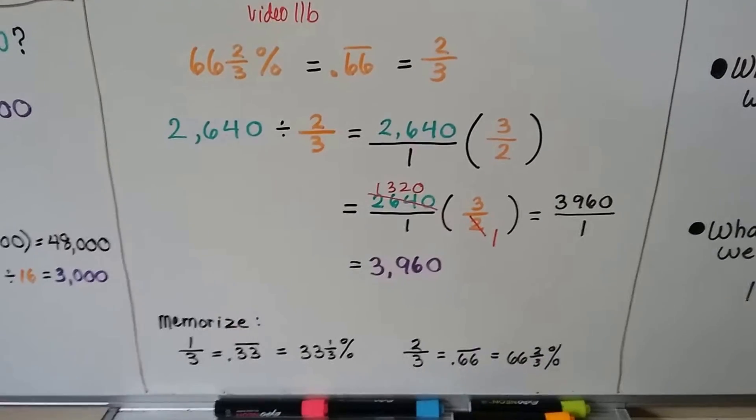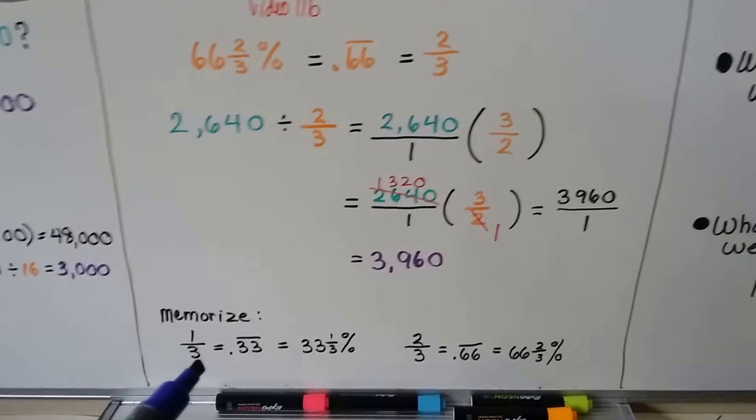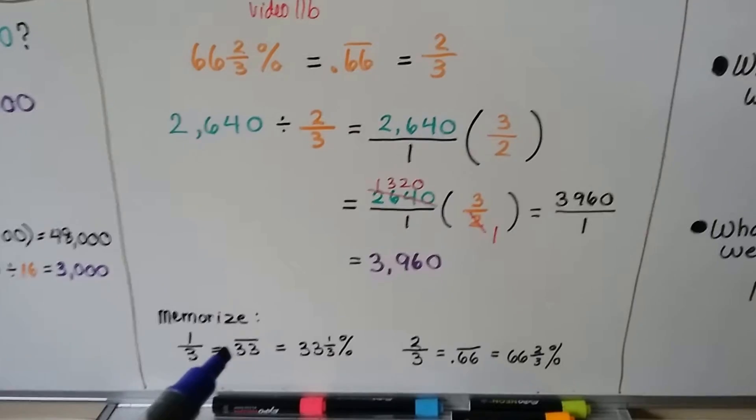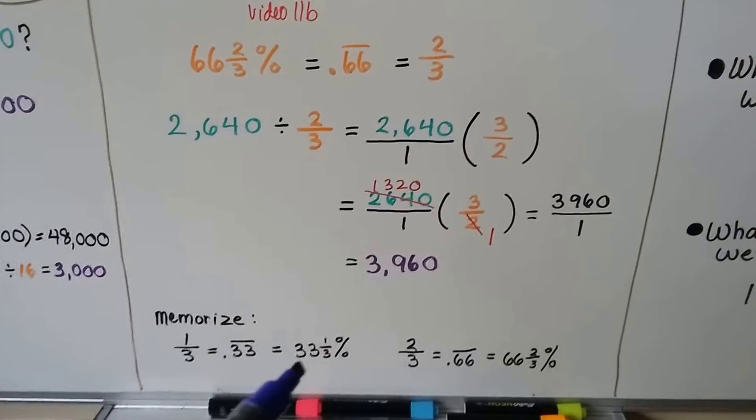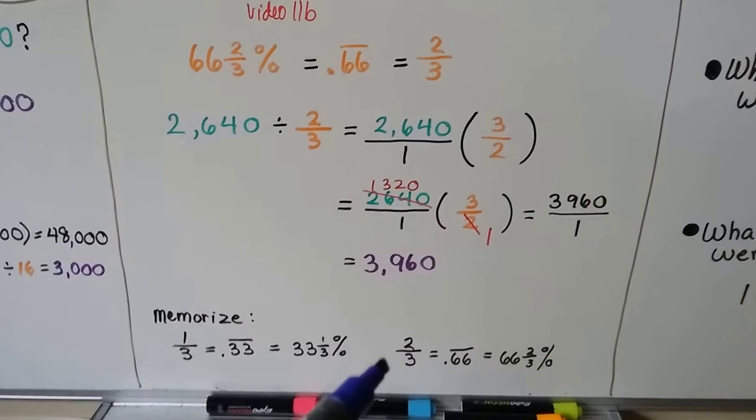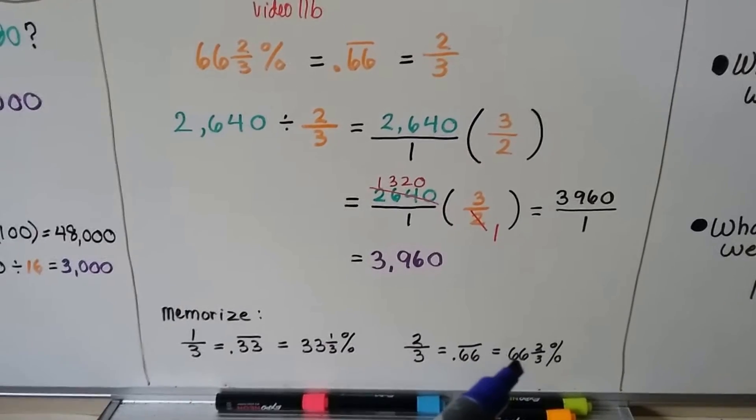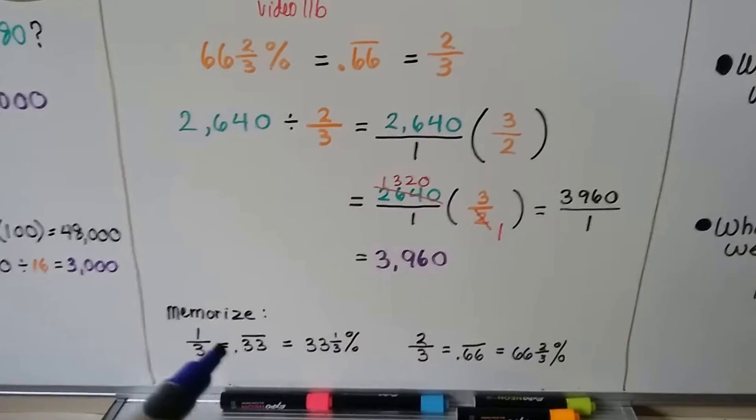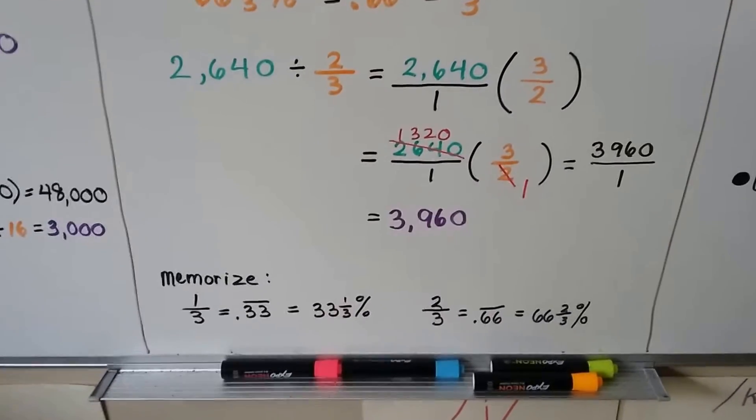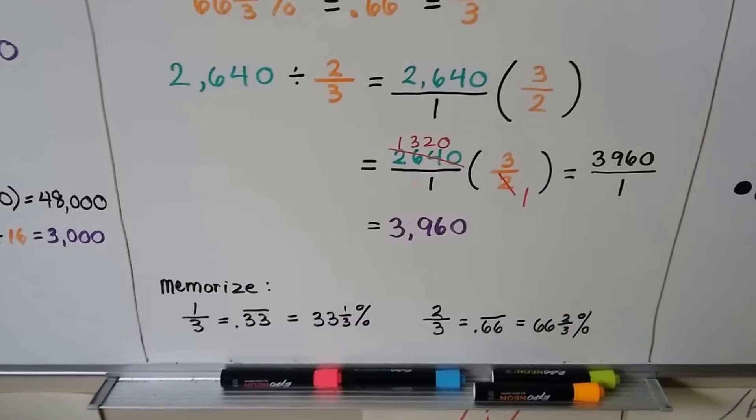Now, this is really, really important. You need to memorize that one-third is 0.33 with that continuing 3, so we put the bar over it, or as a percentage it's 33 and a third percent. Two-thirds would be 0.66, which would be 66 and two-thirds percent. If you can memorize these or write these down in your notes right now, but try to learn them and memorize them, so when you take the test you'll go quicker.